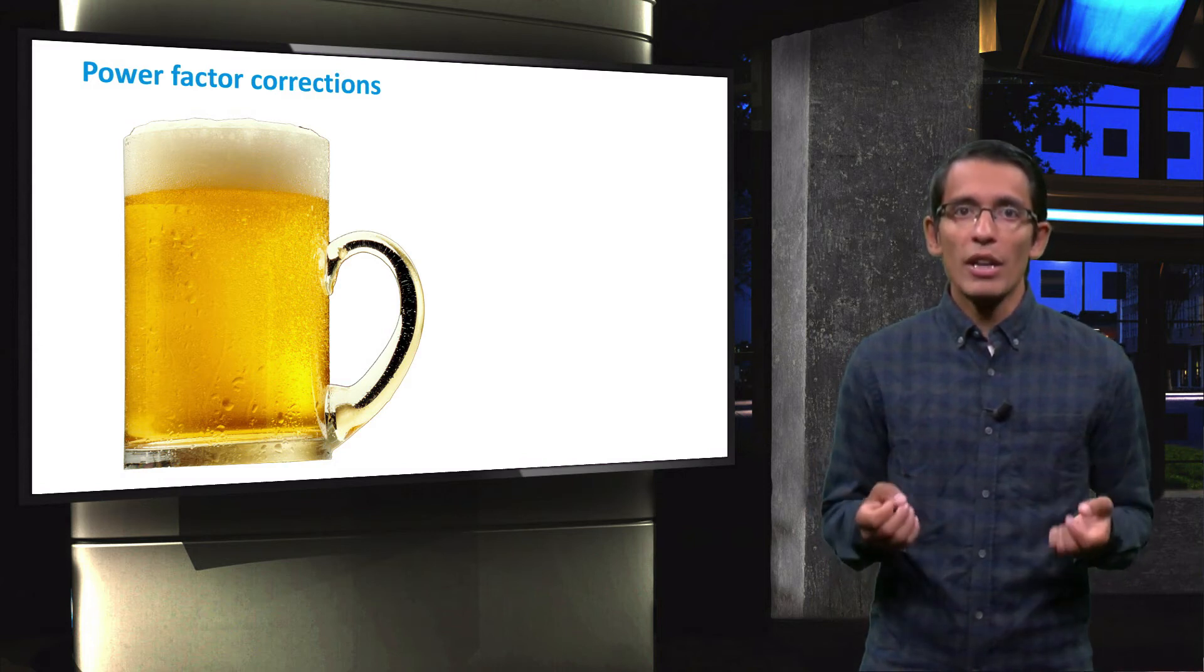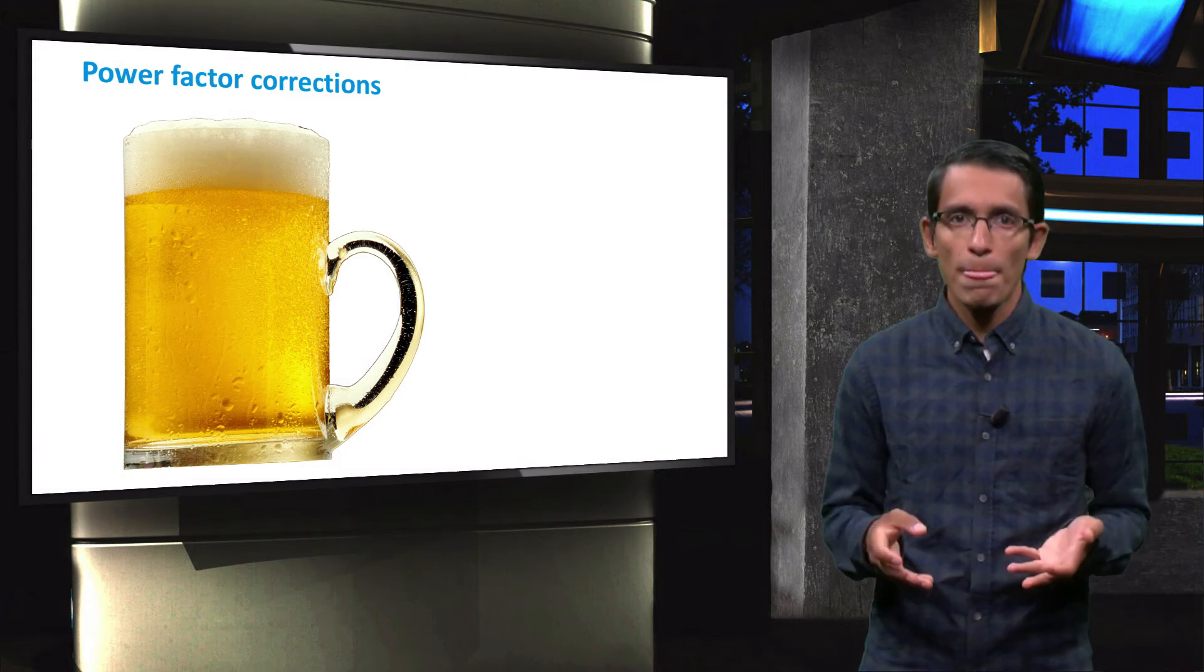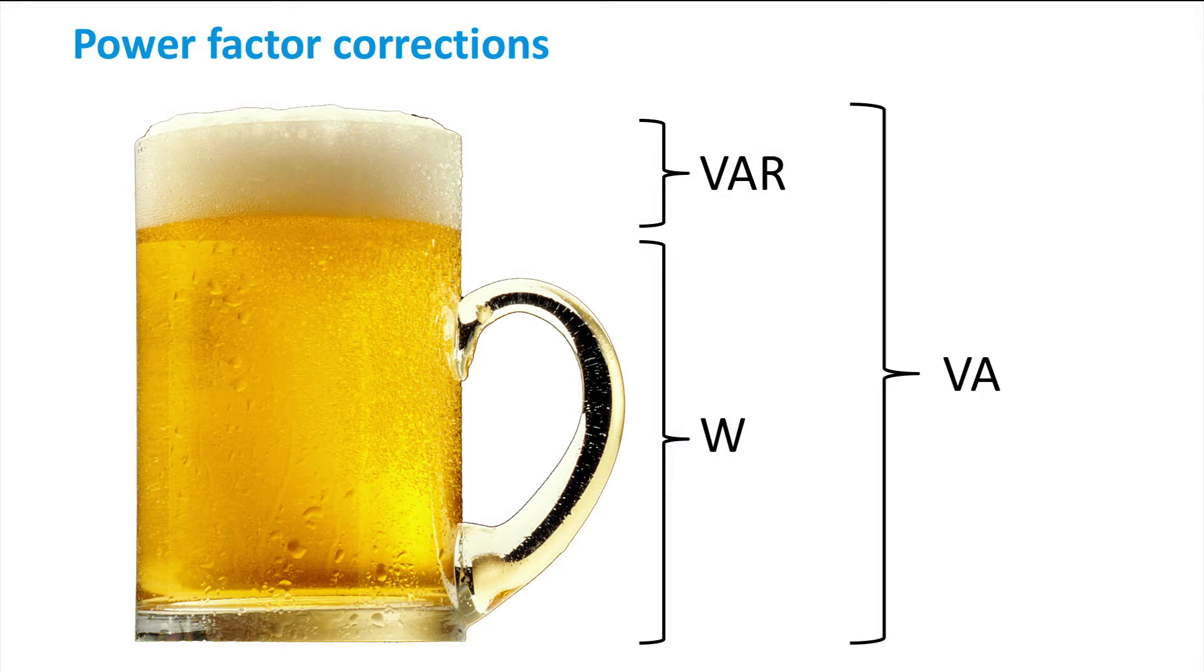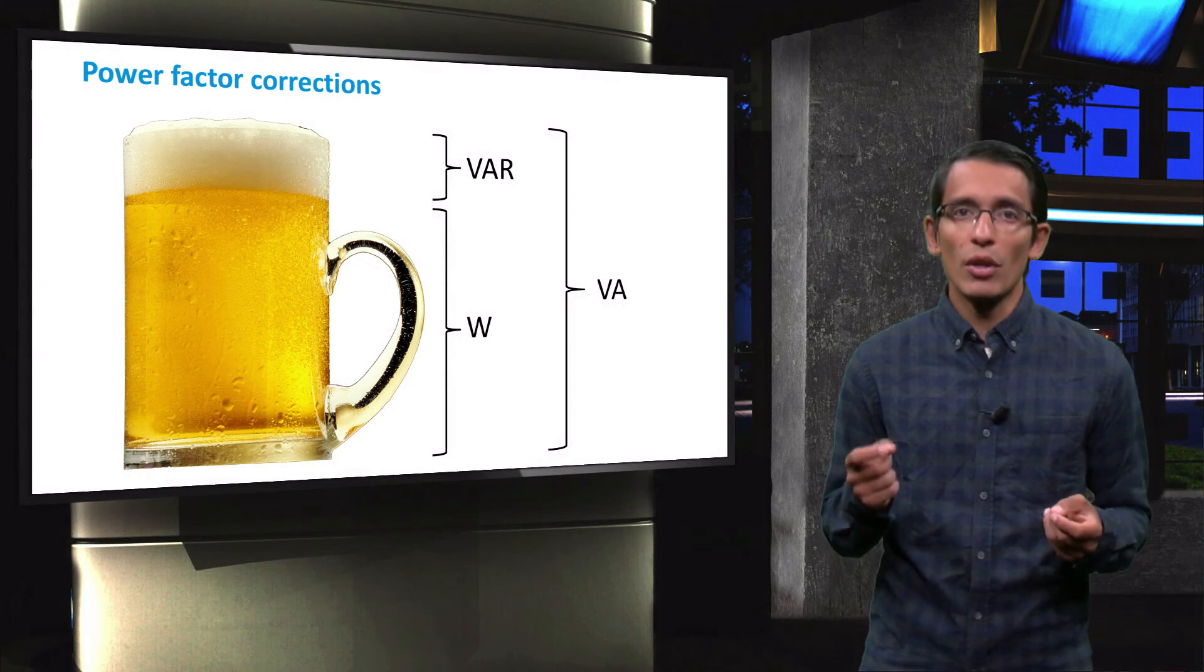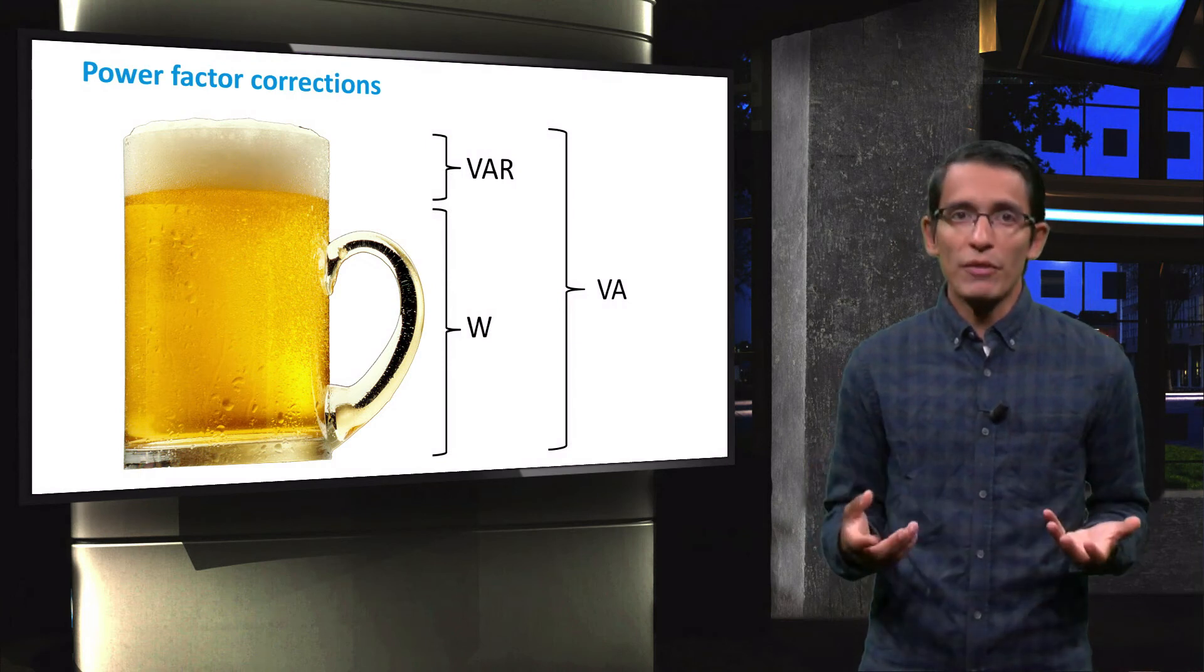The beer mug analogy is a very common and intuitive way to explain the effects of power factor on the electrical grid. Let's suppose the beer is the real power in watts, while the froth on top of it represents the reactive power in volt-amperes. As seen before, the sum is called apparent power in volt-amps. Although a customer pays only for the beer, he will receive also some undesired froth that will occupy the space in the mug, thus decreasing the quality of the beer received. So what does this have to do with PV?